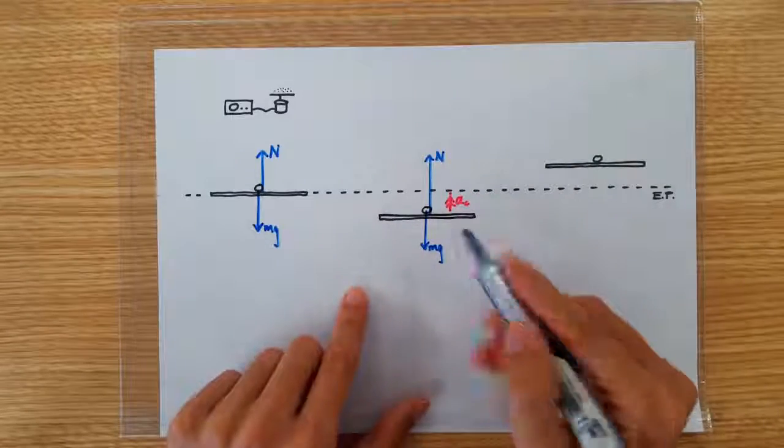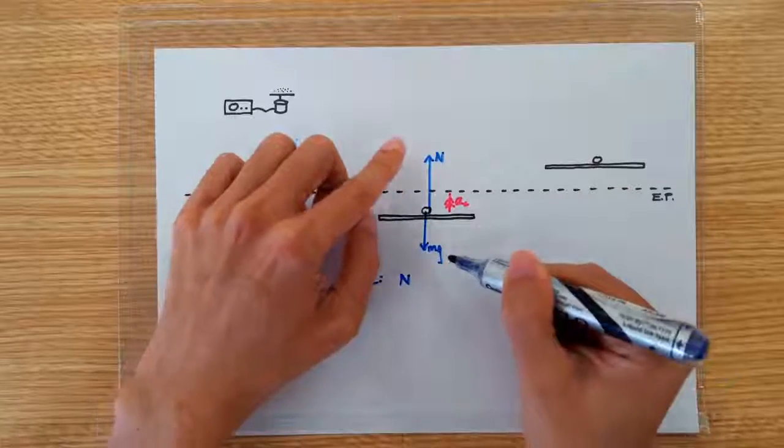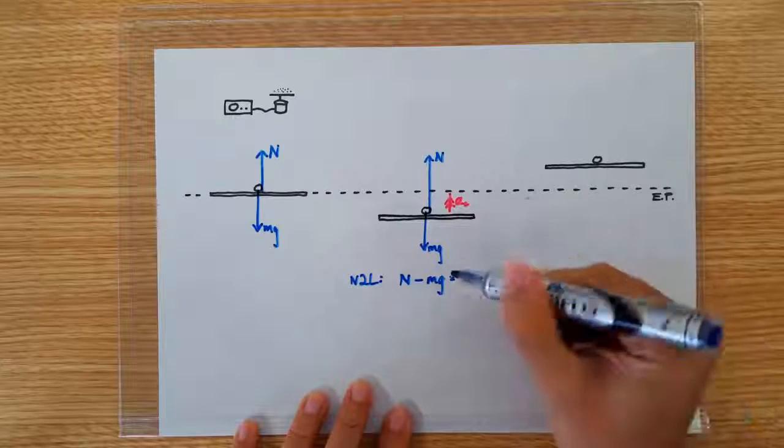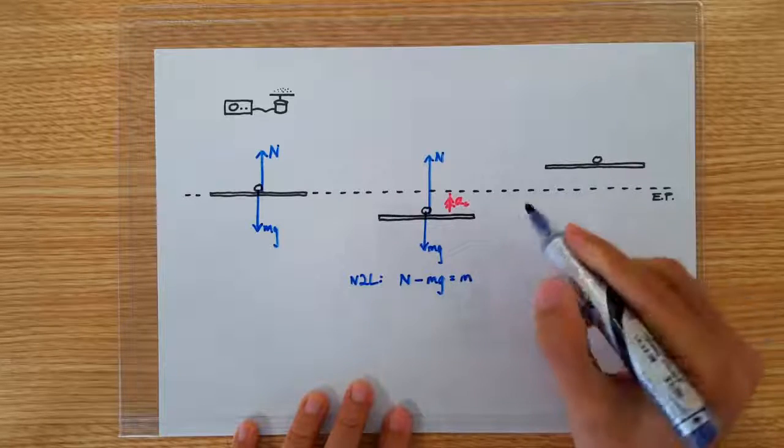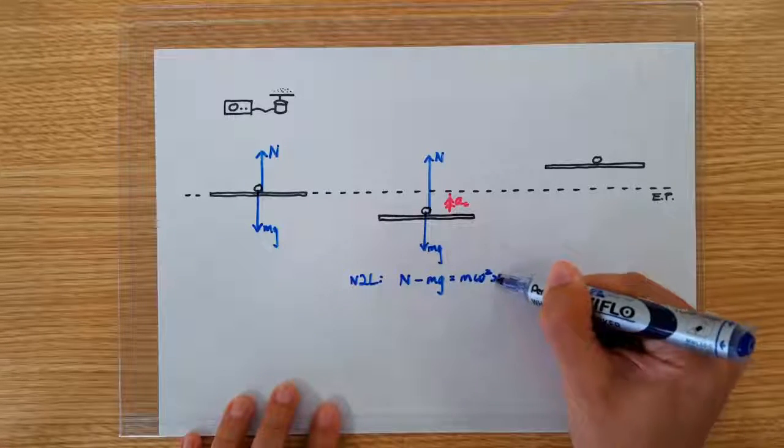Applying Newton's second law on the sand particle, we will write the upward normal contact force minus the downward weight equals M times A, but of course it's SHM, so I can write the acceleration as omega square x.